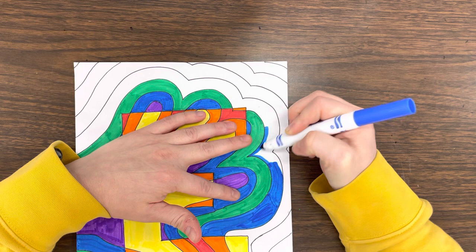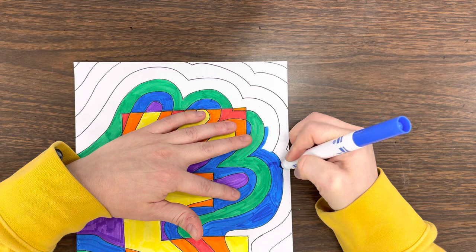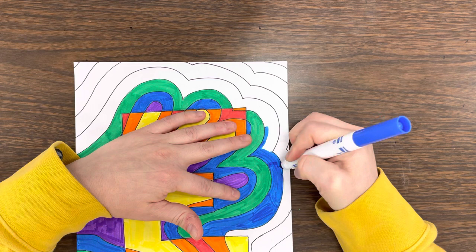Notice how slow I'm going around these areas. I'm really trying hard not to get outside of these lines. Essentially, what we've created is a coloring book, and we are practicing staying in the lines.